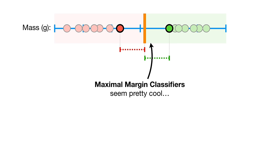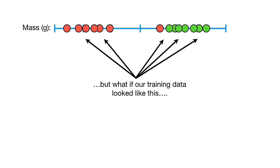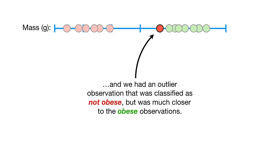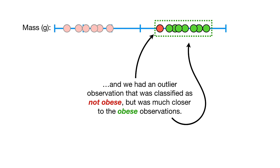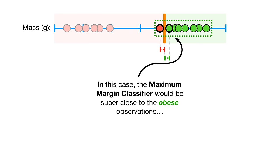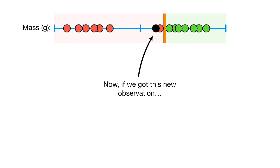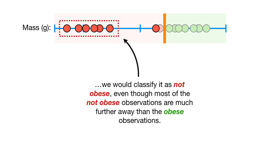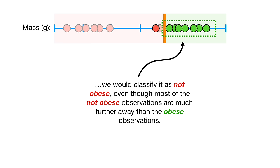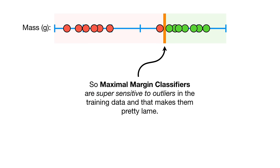Maximal margin classifiers seem pretty cool, but what if our training data had an outlier observation classified as not obese but much closer to the obese observations? In this case, the maximum margin classifier would be super close to the obese observations and really far from the majority of the observations that are not obese. So maximal margin classifiers are super sensitive to outliers in the training data, and that makes them pretty lame.